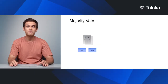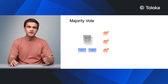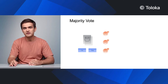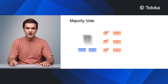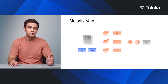Let's look at a basic example. We have an image classification project where we want to label each image as a cat or a dog. For a given image, three performers complete the task. We want to use their answers to make a final estimate. If we believe in the wisdom of the crowd, we need to trust the majority. In this case, two performers think there's a cat in the image — and so do we.